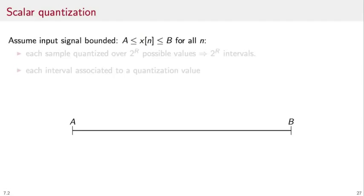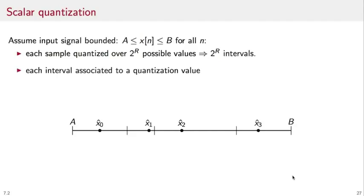Let's see what happens when we scalar quantize an input. Assume we know that each input sample is strictly between A and B. Each sample is quantized over 2 to the r possible values, because we are using r bits per sample, and this defines 2 to the r intervals over the range A to B. Each interval will be associated to a quantization value, which means that whenever the sample falls into this interval here, it will be replaced by this representative value for the interval, and similarly for the other intervals.